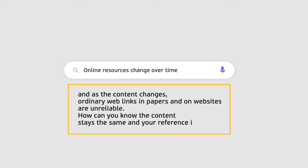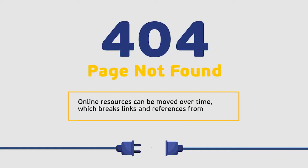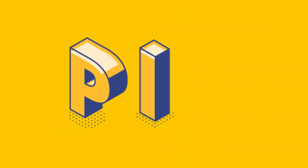Online resources change over time, and as the content changes, ordinary web links in papers and on websites are unreliable. How can you know the content stays the same and your reference is valid? Online resources can be moved over time, which breaks links and references from outside.